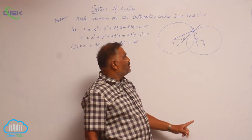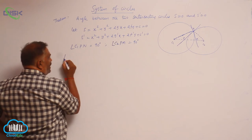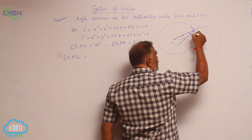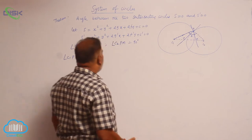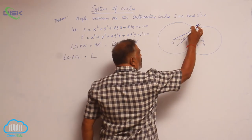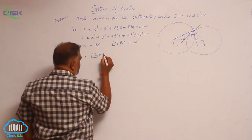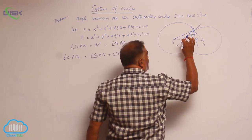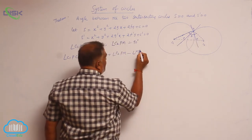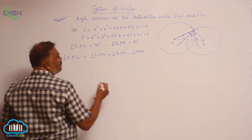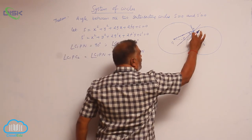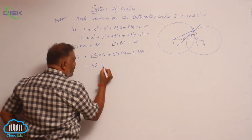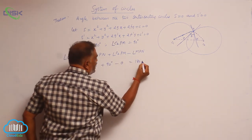Now we need to find angle c1Pc2. Assume that angle to be theta. That is nothing but angle c1PN + angle c2PM − angle MPN. The angle between the two tangents is theta, so this becomes 90° + 90° − theta, which is 180° − theta.